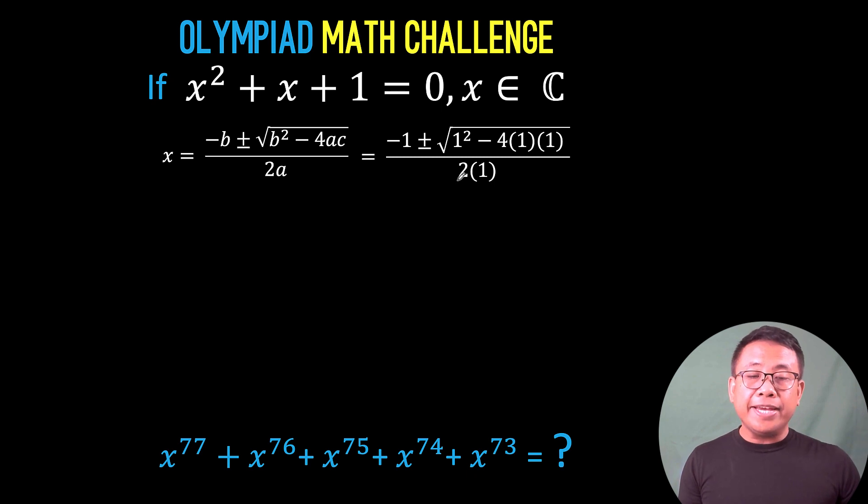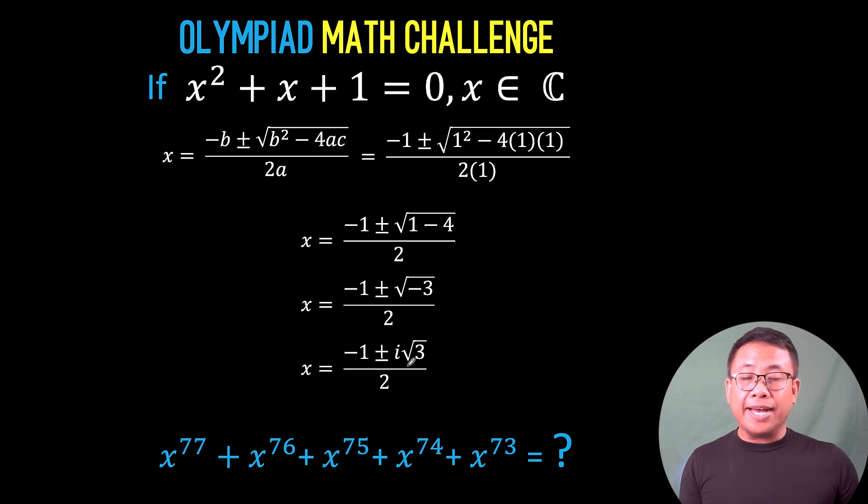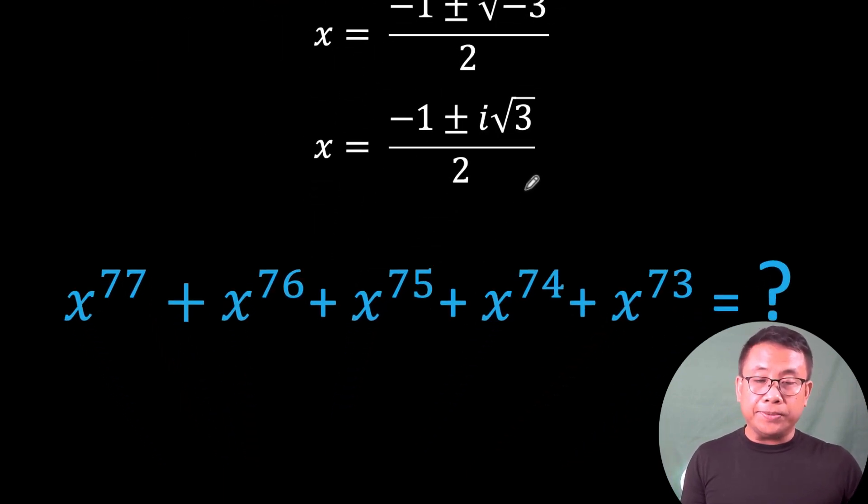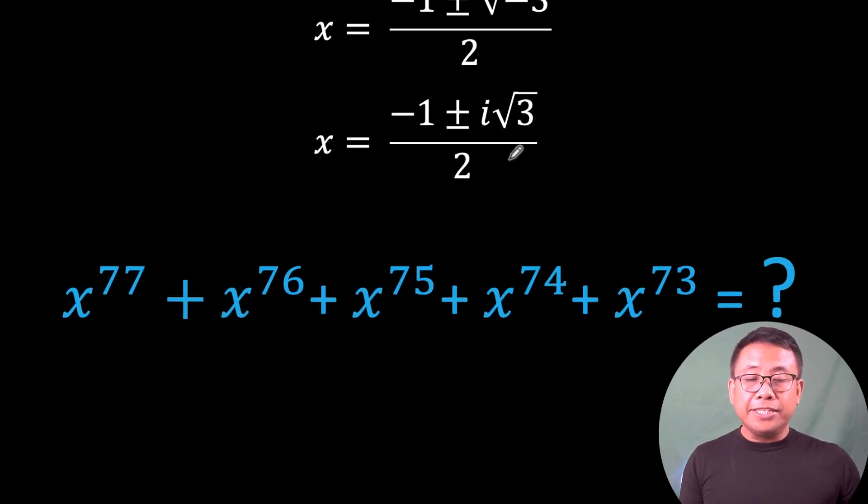we will arrive at a complex number. We substitute 1 for a, 1 for b, and 1 for c, and following the quadratic formula, the result would be (-1 ± i√3)/2. Notice that if I substitute this value to x in the second equation, we will arrive at a very complicated equation. So we are not going to use this approach.